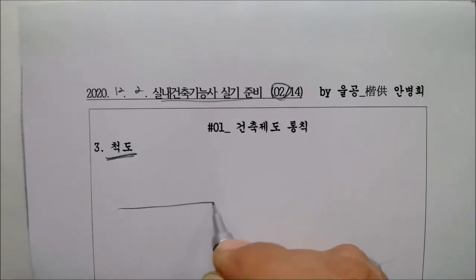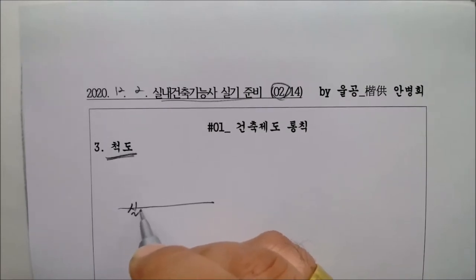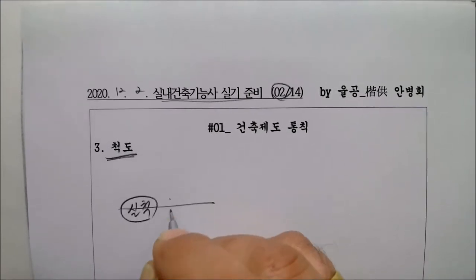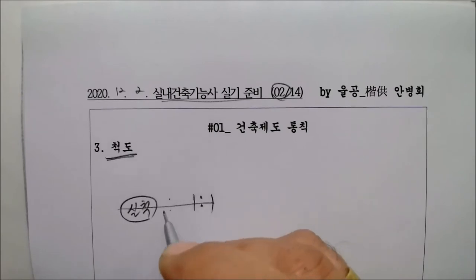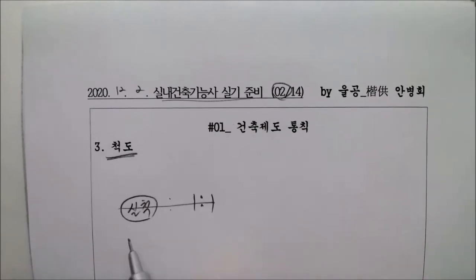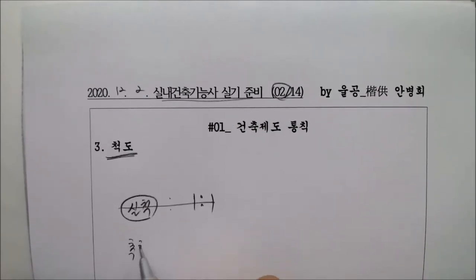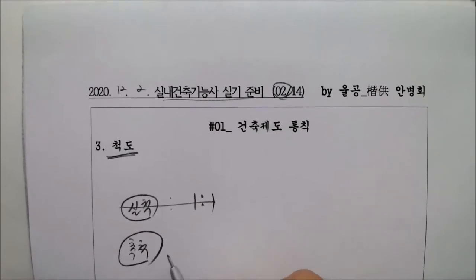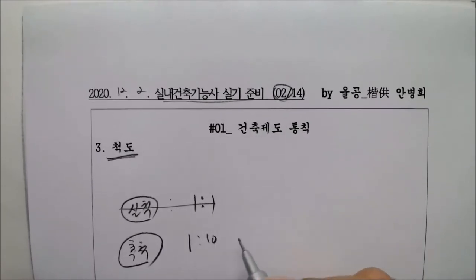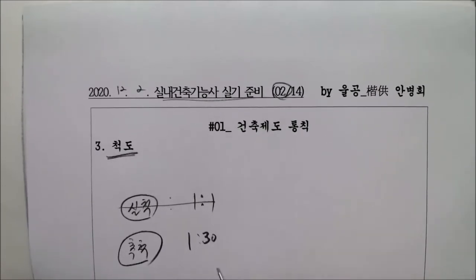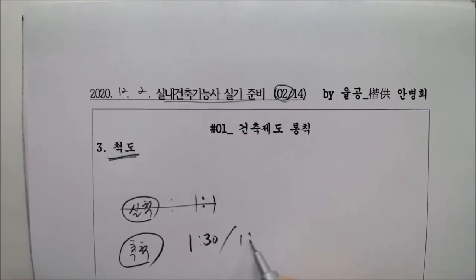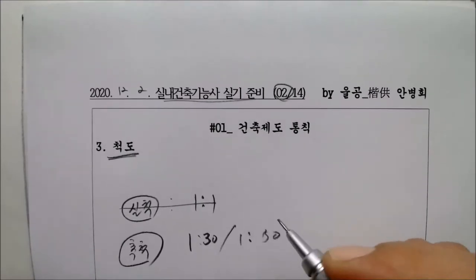제일 중요한거 기본적인거 뭐다? 1대1. 실척. 1대1. 맞죠? 그 다음에 일반적으로 여러분 많이 쓰는게 축척. 축척 얼마? 뭐 1대10이다. 또는 1대30이다. 예를 들께요. 뭐 1대30 또는 1대50이다. 자 이게 무슨 말이냐.